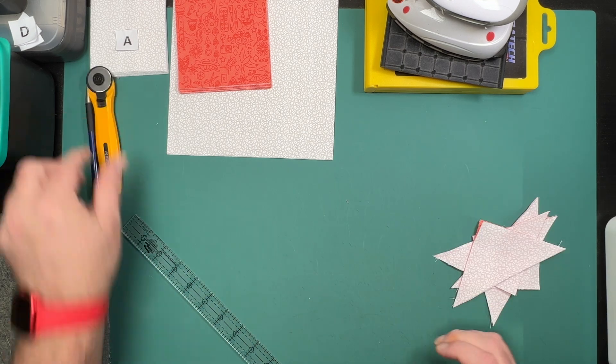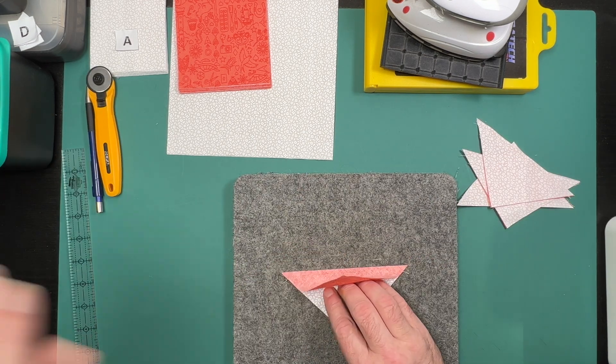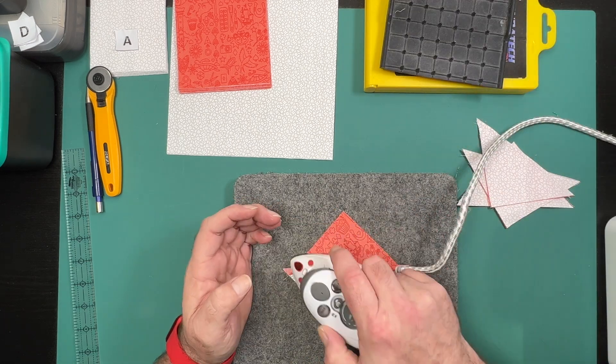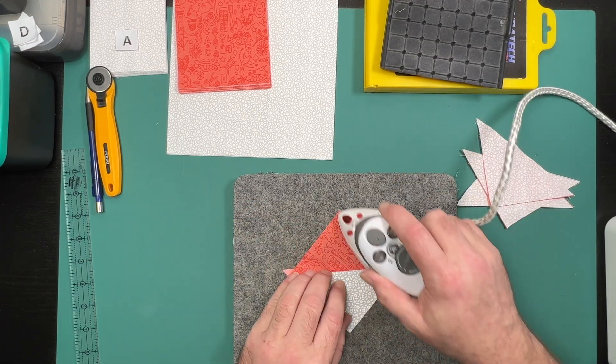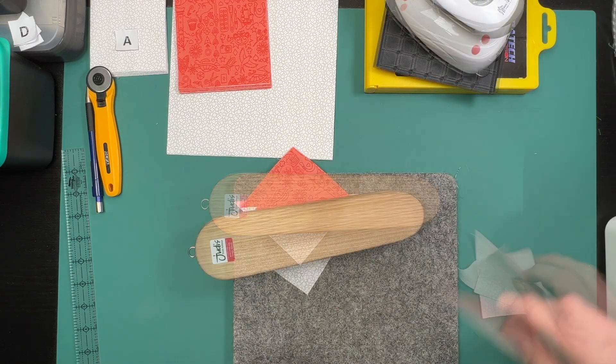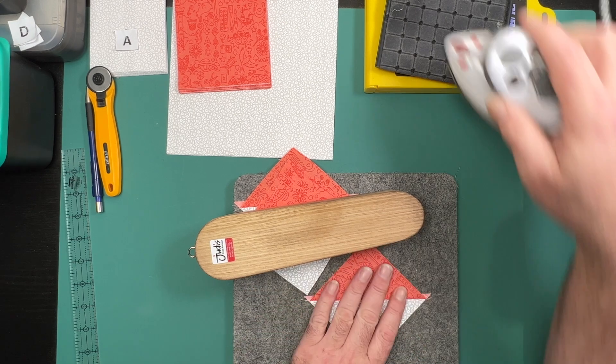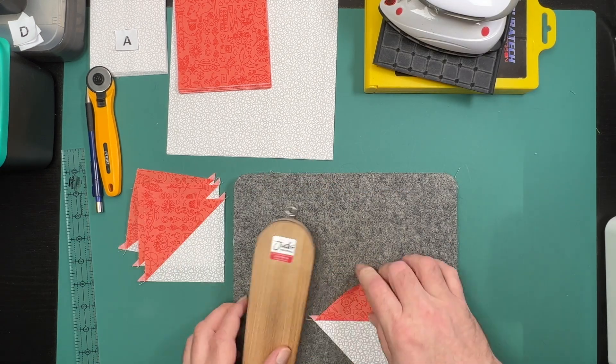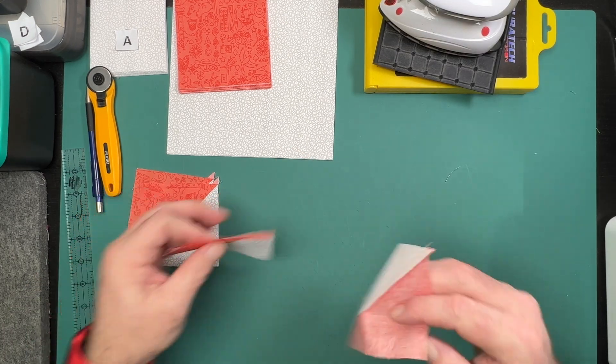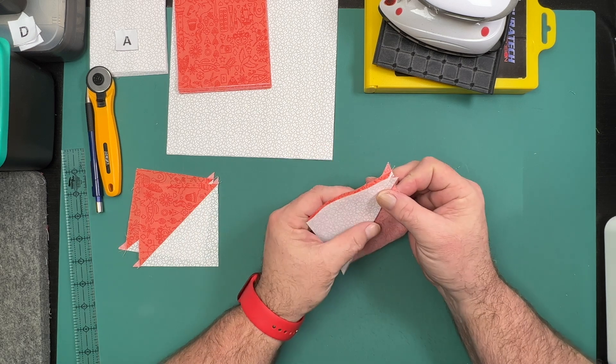You can now trim down your half square triangles with your preferred method.